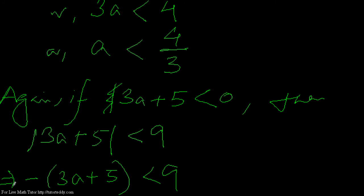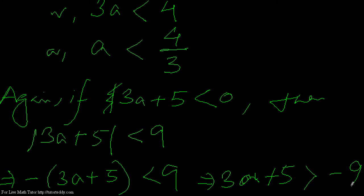If I multiply both sides by a minus sign, that implies 3a plus 5 is greater than minus 9. Why? Because minus into minus gives plus on the left-hand side, and minus multiplied on the right-hand side adds a minus sign before 9. Also, whenever multiplying both sides by a minus sign, the inequality sign changes — less than changes to greater than.